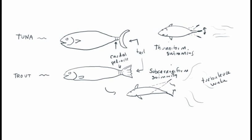Sub-carangiform swimming is better for inshore situations requiring maneuverability, while thuniform swimmers like tuna and lamnid sharks — including the great white shark — tend to be completely open-water fish. You would never see a great white shark backing up; it has to swim a big circle, turn around, and then attack.